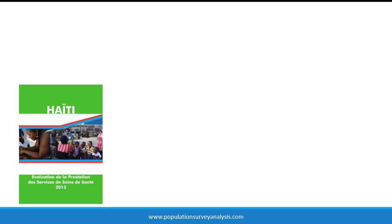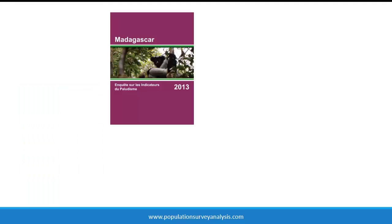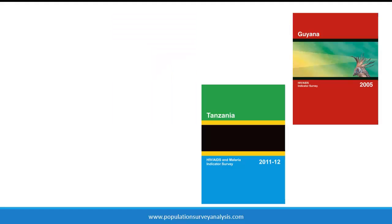The Measure DHS project is responsible for other surveys including the Service Provision Assessment, which provides a comprehensive overview of the country's health service delivery system by interviewing health care providers, administrators, and patients across a sample of health facilities. They also perform Malaria Indicator Surveys, MIS, which record data about bed net ownership and use, and treatment of fever in young children. This questionnaire is often incorporated in a typical DHS, but may be administered separately. Thirdly, the AIDS Indicator Survey, AIS, provides data to monitor national HIV/AIDS programs and outcomes, and is usually added to a typical DHS as well.